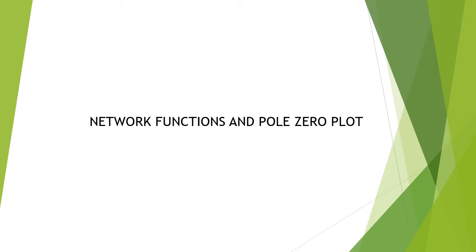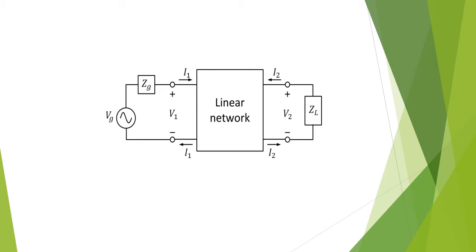Welcome to the network functions and pole-zero plot presentation. This is a two-port network which has an input port connected to the supply voltage of Vg volts having an internal impedance of Zg ohms. The input port voltage is termed V1 and input port current is I1. The output port is connected to the load impedance with current I2, as shown in the diagram, and the output port voltage is V2.